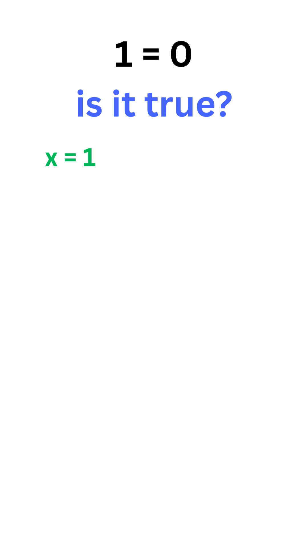x equals 1. Now, multiply both sides with x. We get x square equals x. Looks good so far.